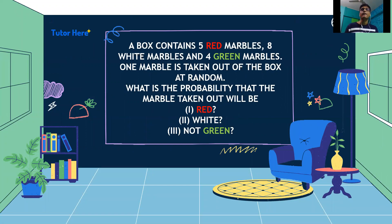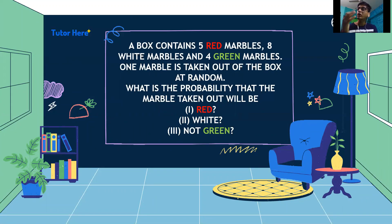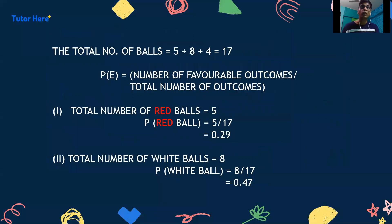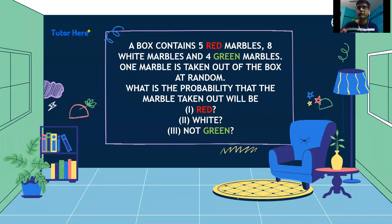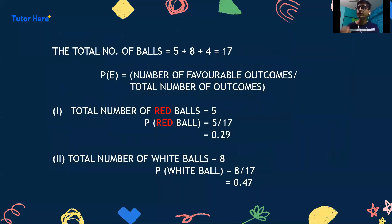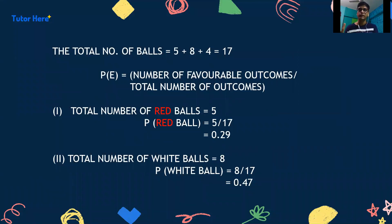Let's look at another example. A box contains 5 red marbles, 8 white marbles, and 4 green marbles. One marble is taken out of the box at random. What is the probability that the marble taken out would be red or white? The total number of marbles is 5 plus 8 plus 4, which equals 17. Using the formula — number of favourable outcomes divided by total outcomes — the probability of getting a red marble is 5/17, which is approximately 0.29. Similarly, the probability of getting a white marble is 8/17, which is approximately 0.47.